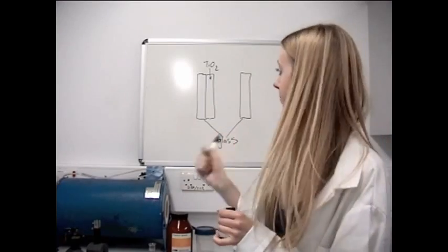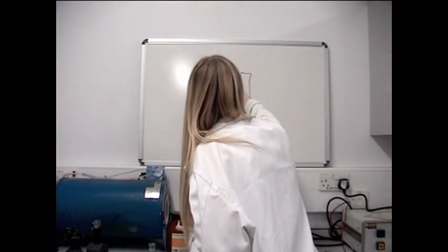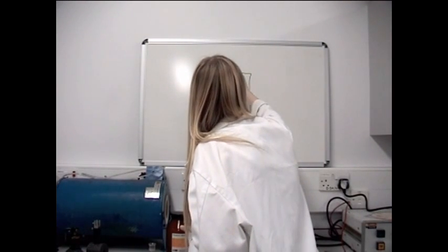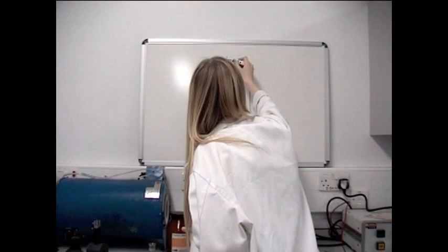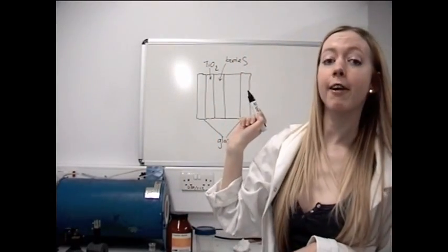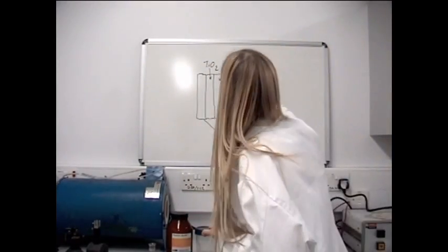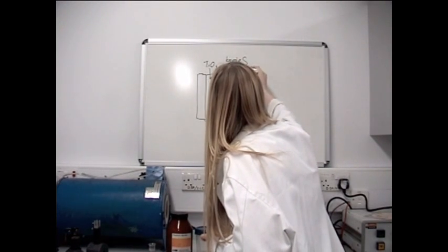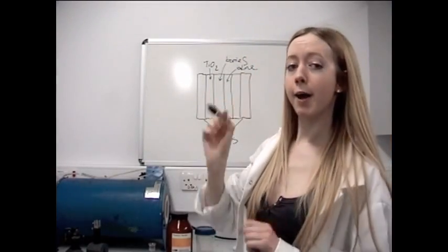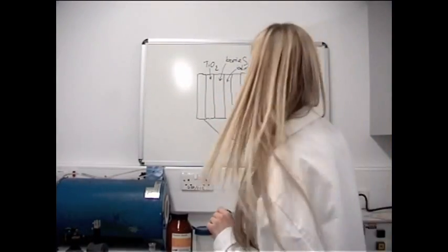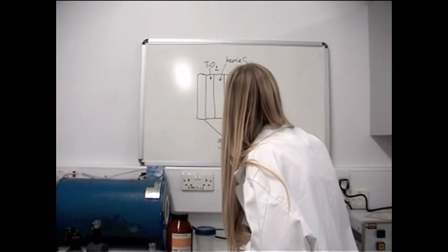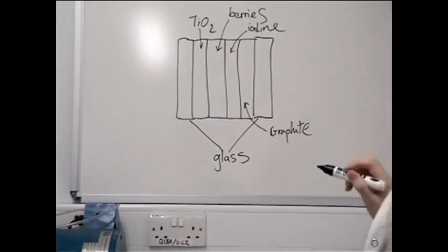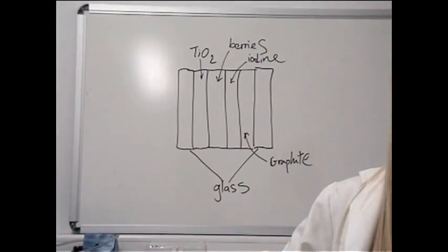Then we're going to mush up some berries. So the next layer is going to be some berries. The next layer after that is going to be some iodine. And finally, we're going to have some graphite from a pencil. So that's how we're going to put the solar cell together.